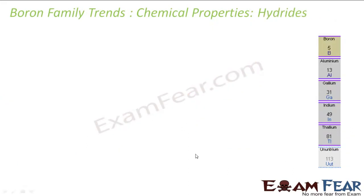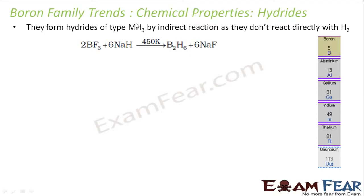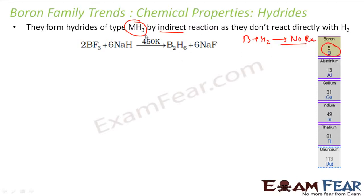Let's talk about reaction with hydrides. Boron typically does not react with hydrogen directly, but hydrides can be obtained by indirect reaction. For example, boron reacted with hydrogen will give no reaction. However, you can produce this hydride indirectly: take a boron halide such as boron fluoride and react it with sodium hydride, and you get B2H6. The boron hydrides are called boranes. B2H6 is the simplest hydride — it is pretty unstable, but it is the simplest boron hydride, called borane.